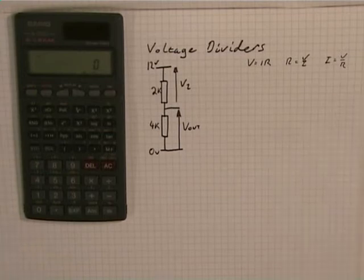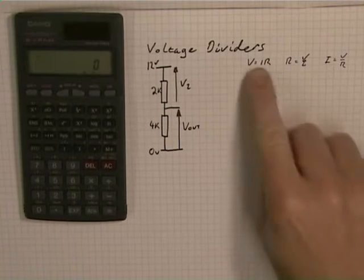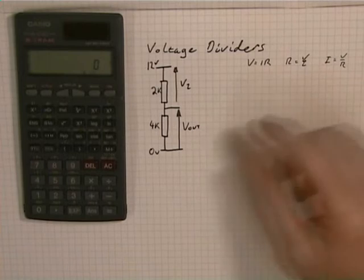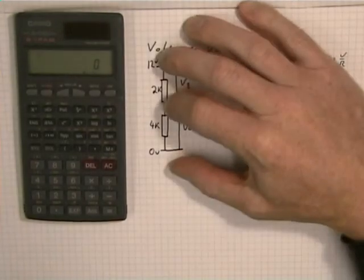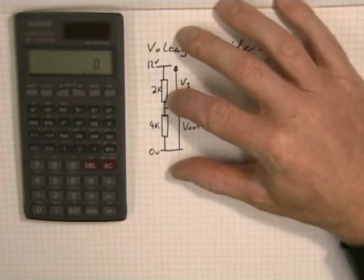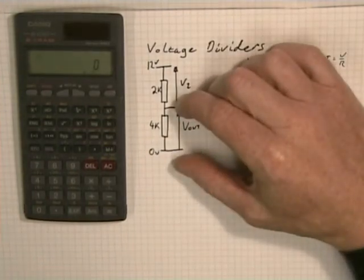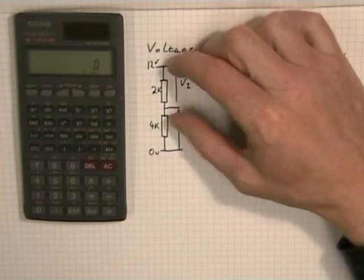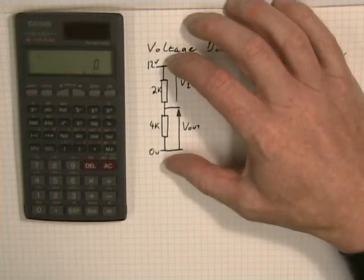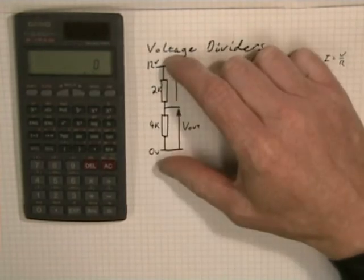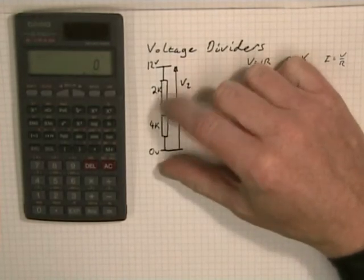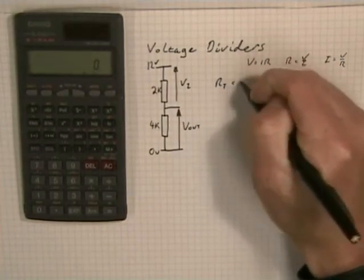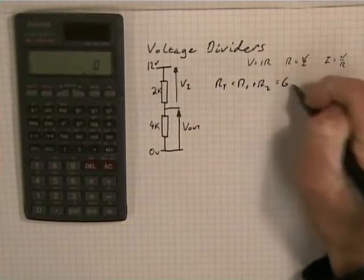Looking for somewhere to start, to use the Ohm's laws we need to know two things to find the third. Down here I only know 4k. Up here I only know 2k. Between these two points, however, I know the voltage is 12 volts, and I know I've got two resistors in series, giving me a total resistance of 6k. So RT equals R1 plus R2, that equals 6k.